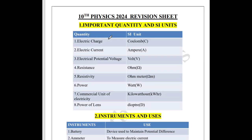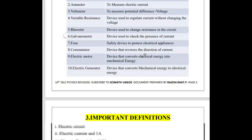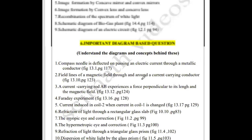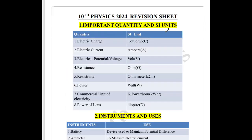It's a revision sheet. I request you all to download this revision sheet from the description box — I've put a Google Drive link where you can download this PDF. Better to take a printout of it because this contains a consolidated entire physics Part 1 and Part 2 as a revision sheet. If you can practice these things, I'm damn sure — there are only 5 pages where important things are consolidated.